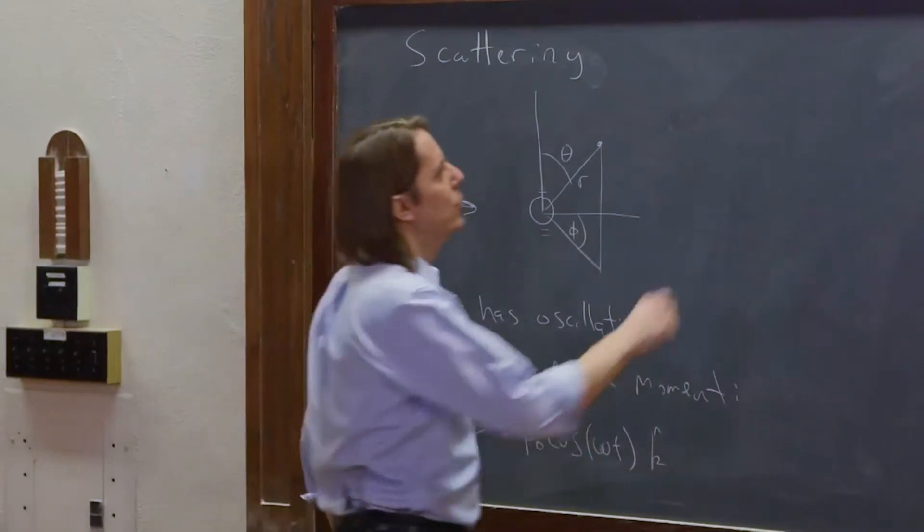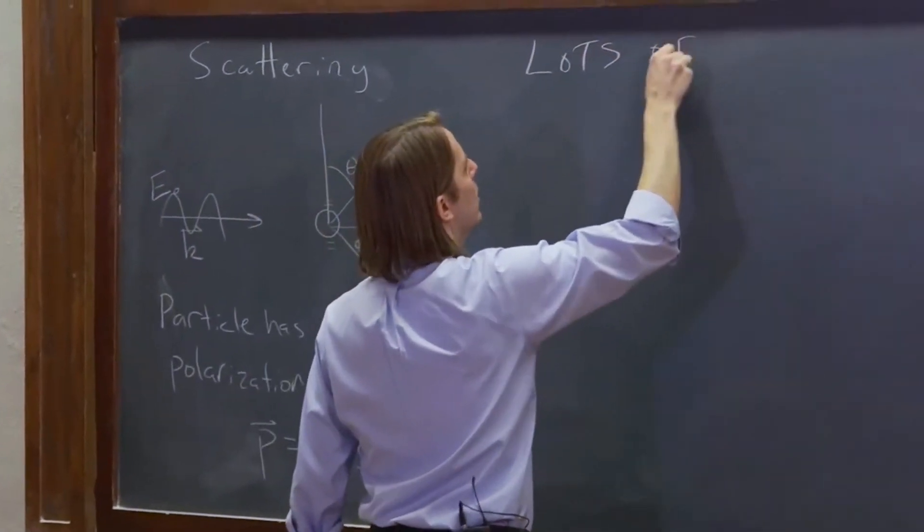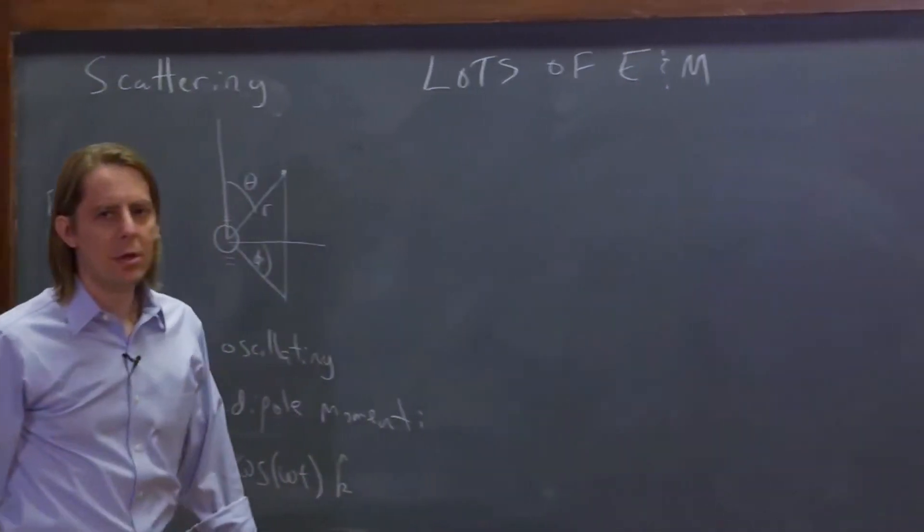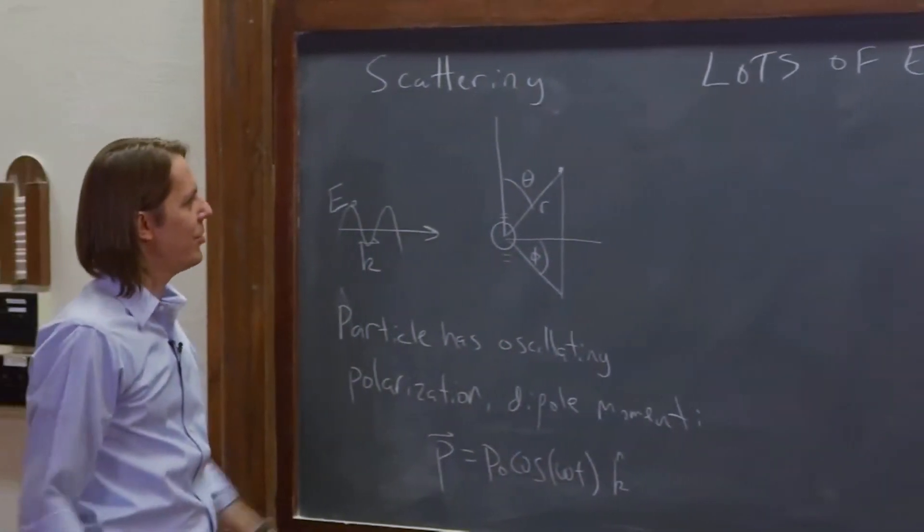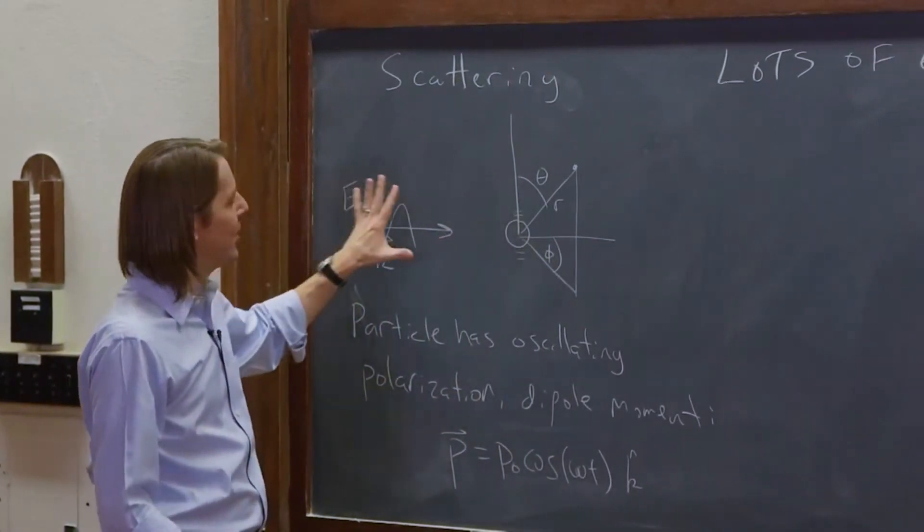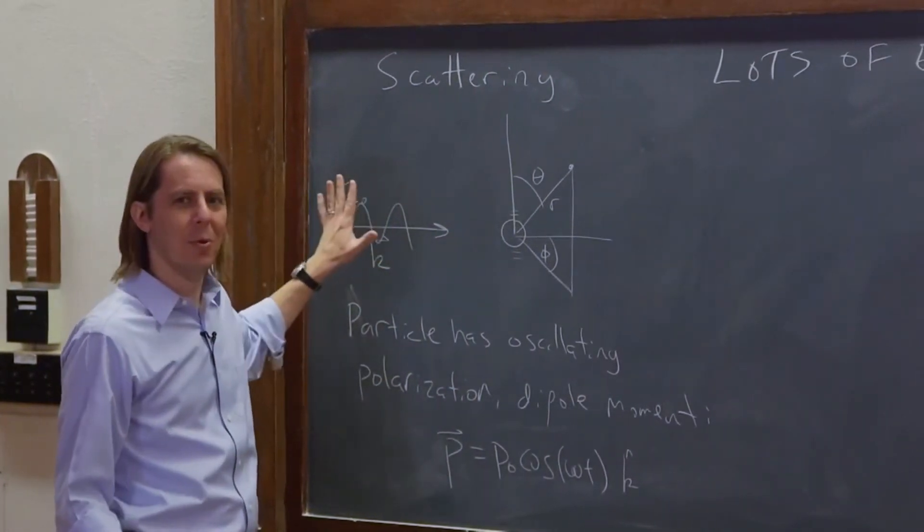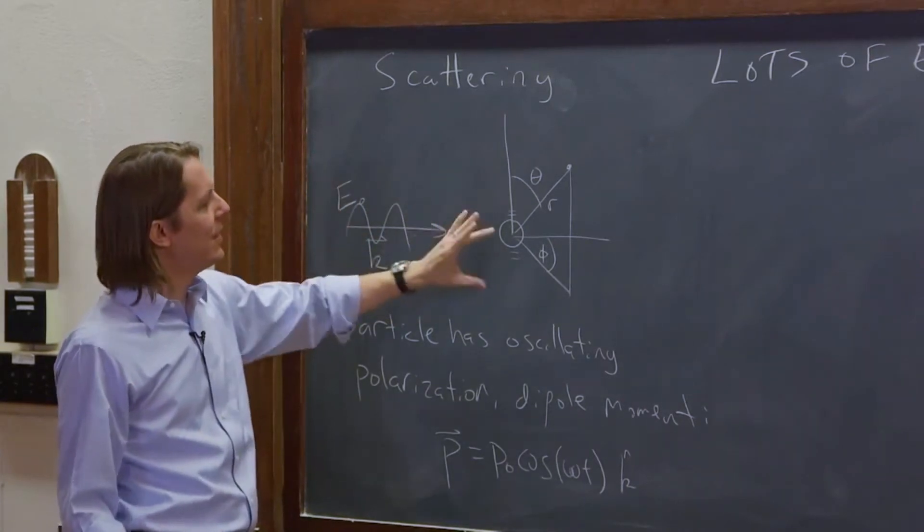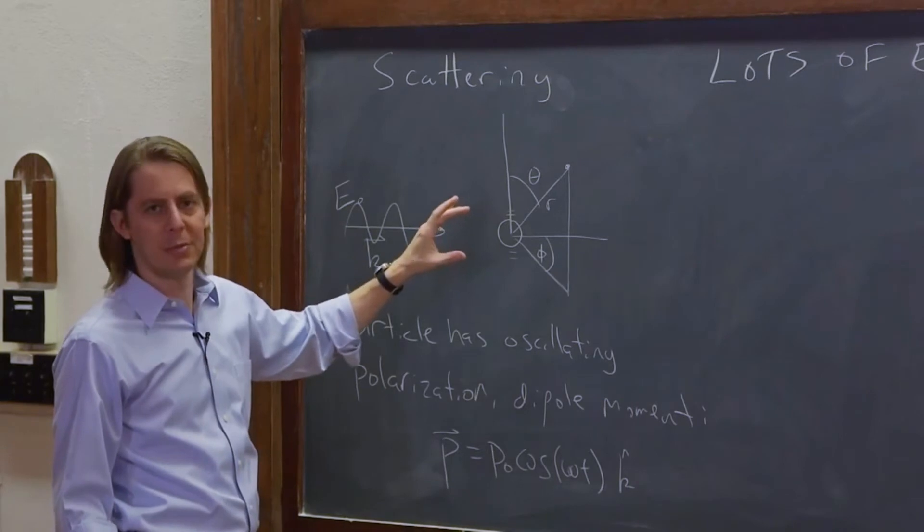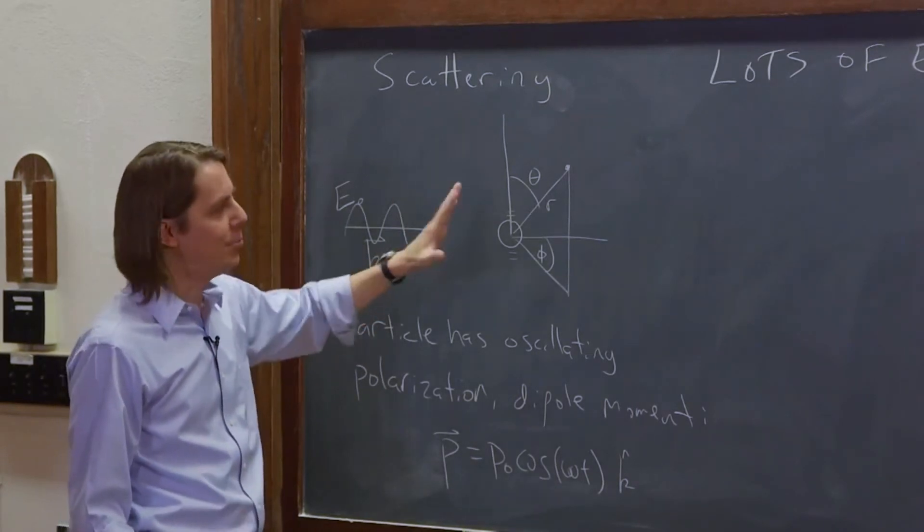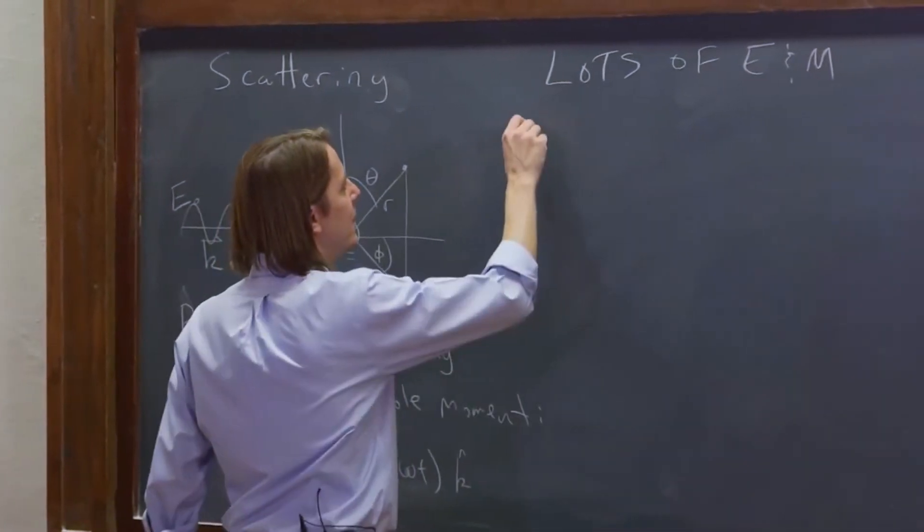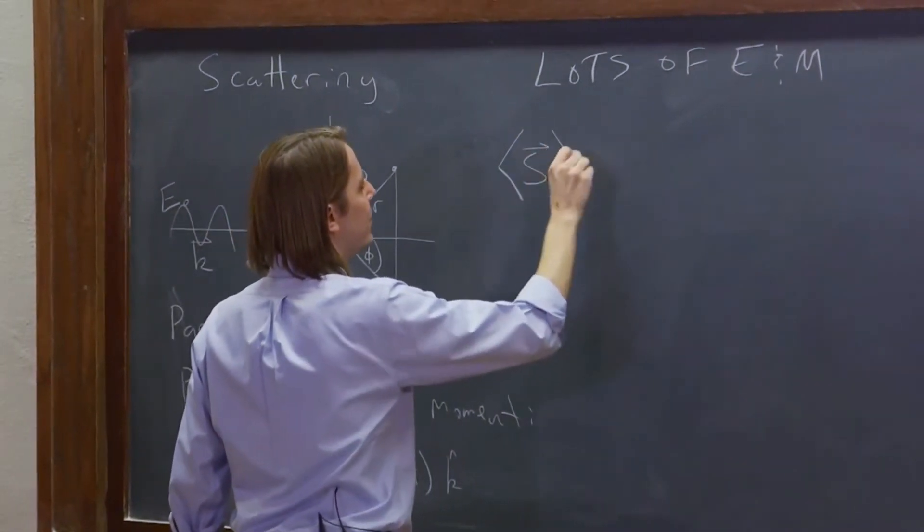The next thing you do is lots of E and M would fill many, many boards to calculate the electromagnetic field that comes off this. And we're not even really thinking about the incident plane wave anymore. All we said for the incident plane wave is it sets up this oscillation. We're really calculating the dipole radiation pattern here.